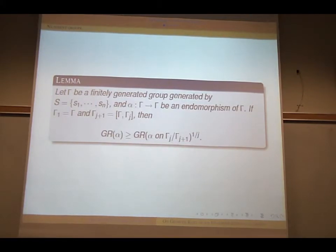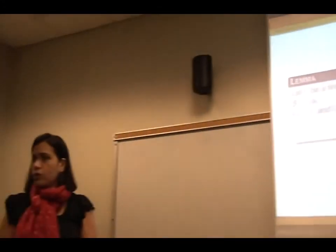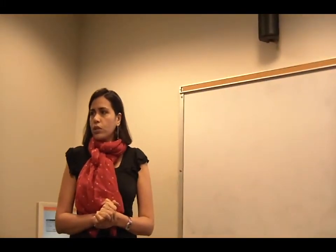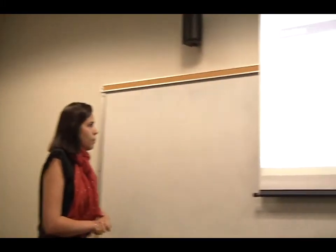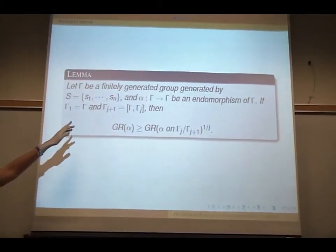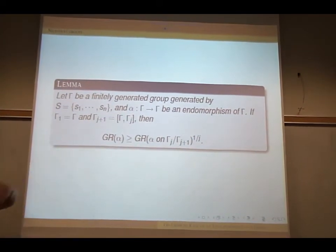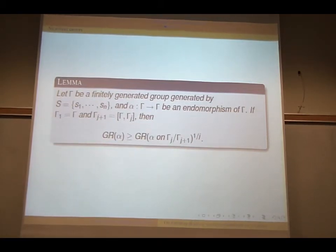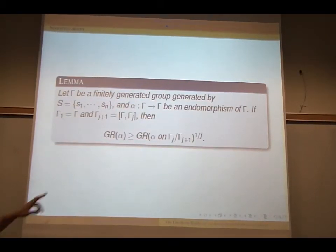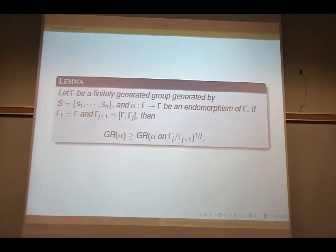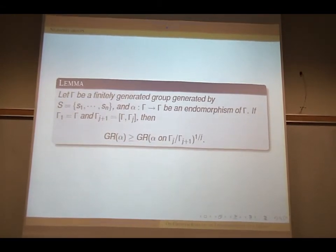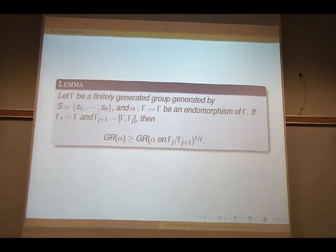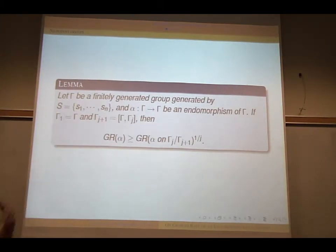So we want to move to nilpotent groups. So nilpotent groups, the way you define it, you take gamma to be gamma 1. And inductively we define gamma j+1 to be the commutator of gamma j. And a group is nilpotent if at some point the whole, there exists a C such that gamma_{c+1} is the identity.